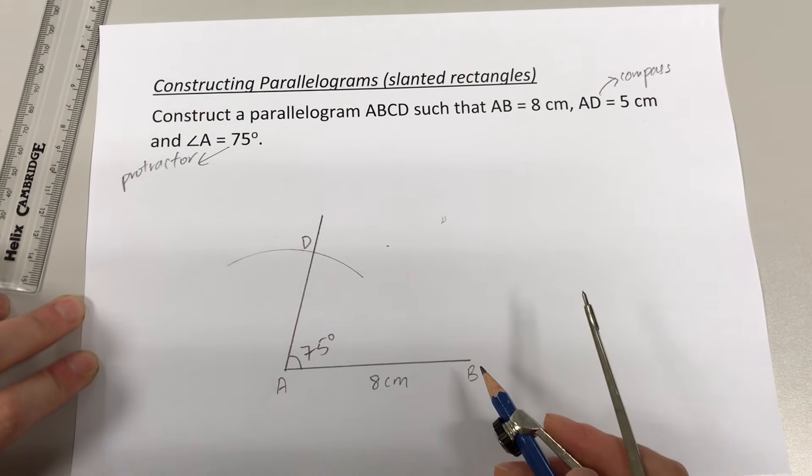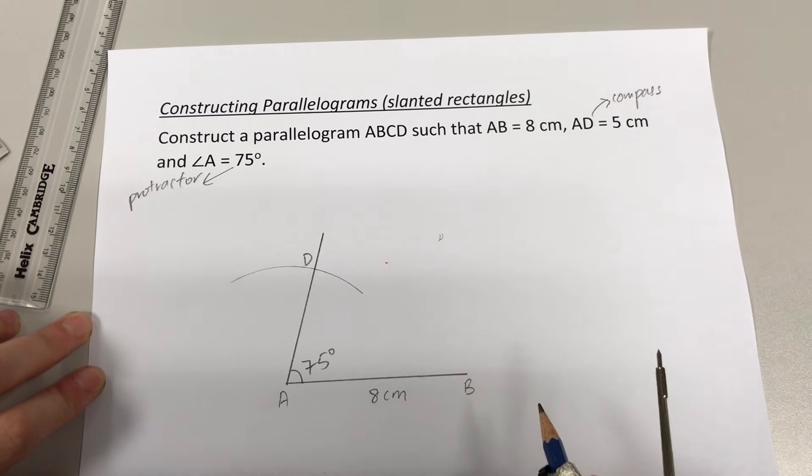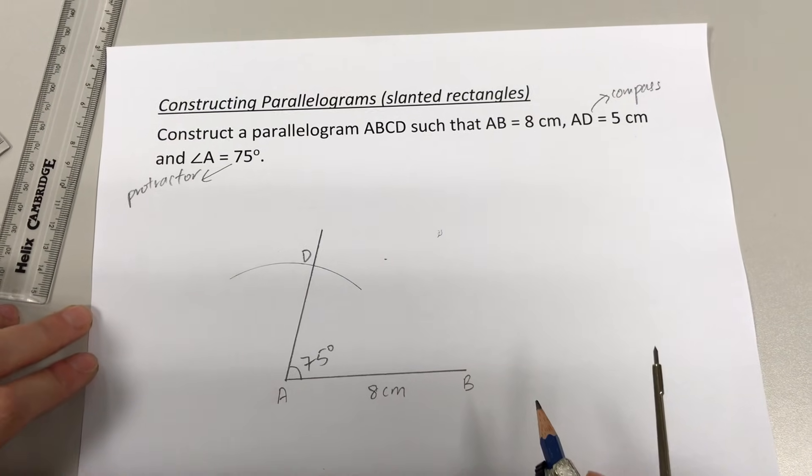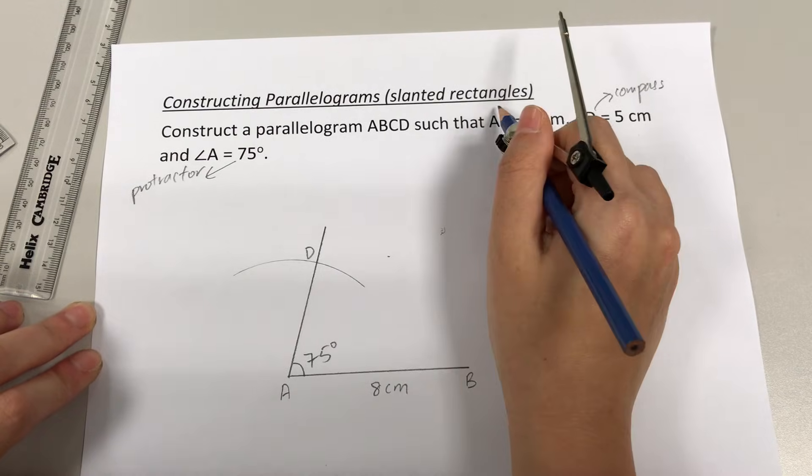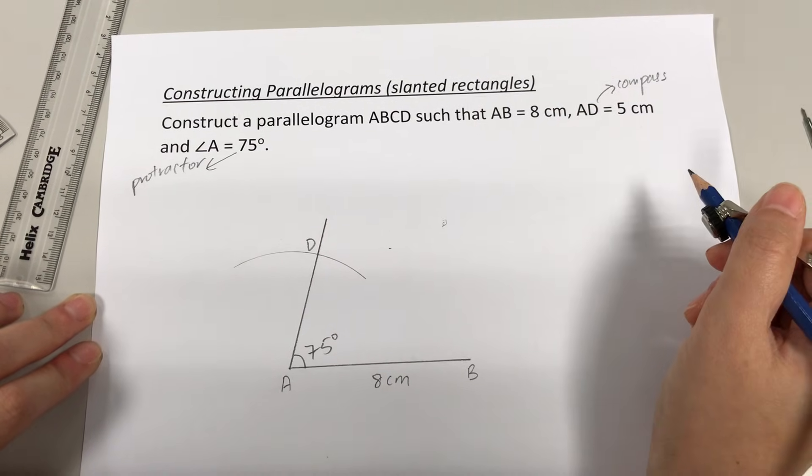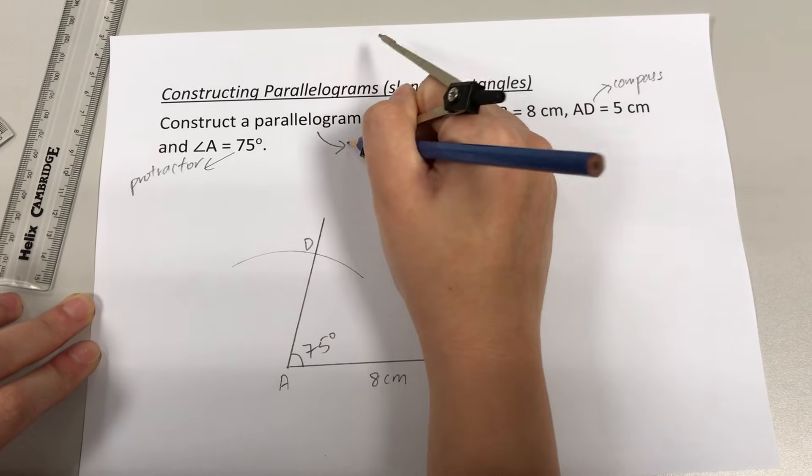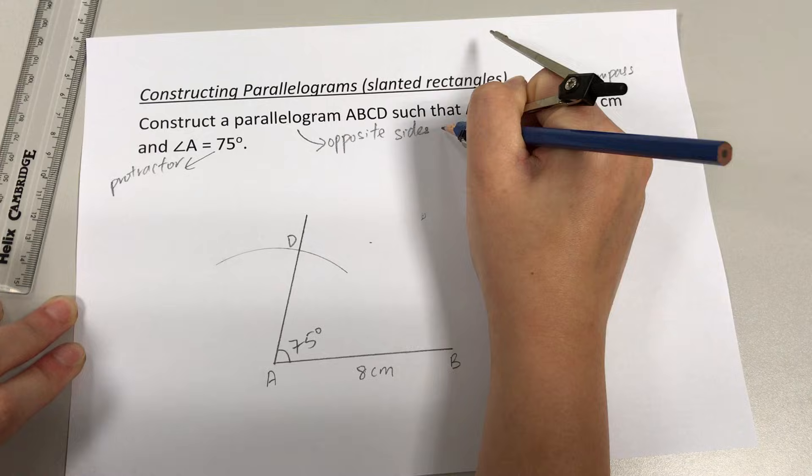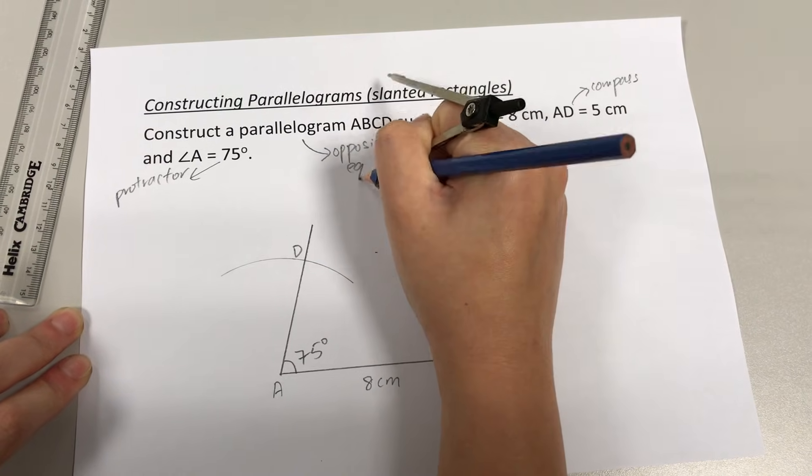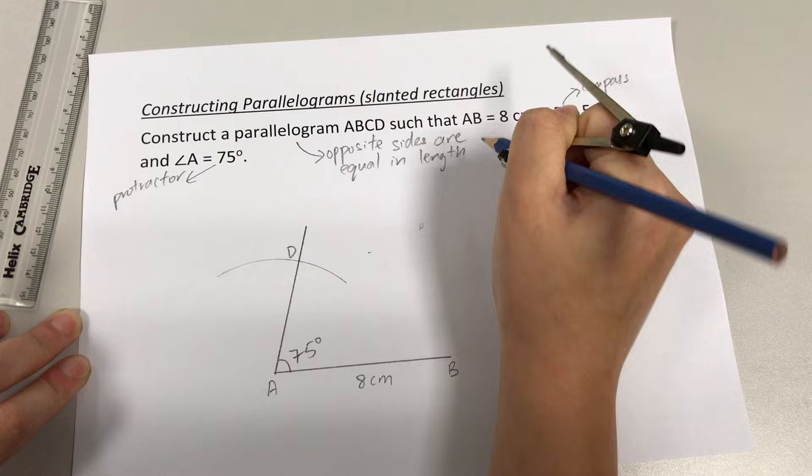And yet this obviously doesn't look like a parallelogram at all. So this is when you have to make use of the property of a parallelogram. Since it looks like a slanted rectangle, one property it has in terms of the length is that opposite sides will be equal in length.